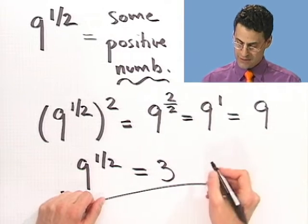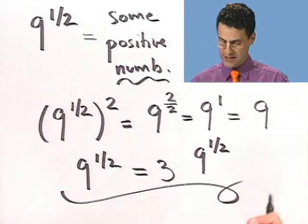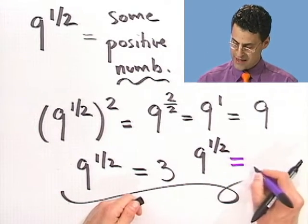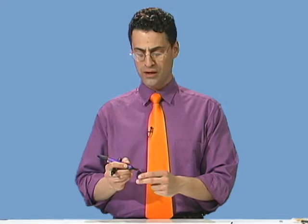Aha! So what that says is that 9 to the 1 half actually is the same thing as the square root of 9. So what do fractional exponents lead to? They actually lead to roots, taking the roots of something. And we just discovered that with this simple example.